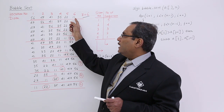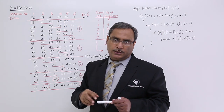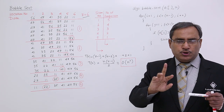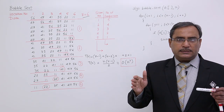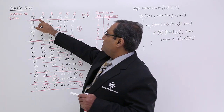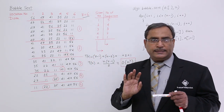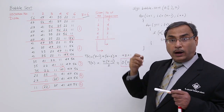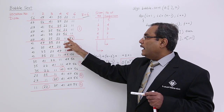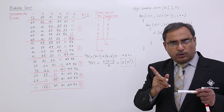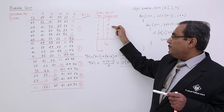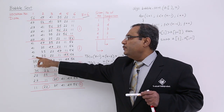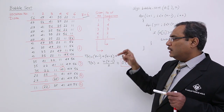Think of it like lamp posts: if we have 6 lamp posts, we have 5 gaps. So comparing adjacent pairs among 6 numbers gives 5 comparisons. In scan 1, number of comparisons is 5; in scan 2, it is 4 — because one element is already placed correctly, leaving 5 data items, so 4 comparisons. Then 3, then 2, then 1 comparison.